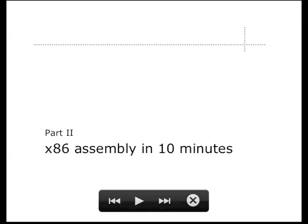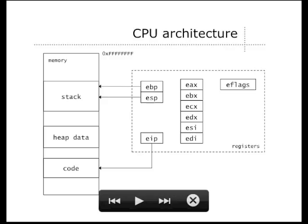We'll start with a brief introduction to x86 assembly. This is crucial because when you don't have the source code to a program, the only thing you're going to have is the machine instructions. An x86 CPU — which is what all of these computers have — has its main memory split into the stack and the heap for the data the application uses, and then the code of the program. The stack is used for local variables in C; the heap is used for anything allocated with malloc and free. You also have registers.